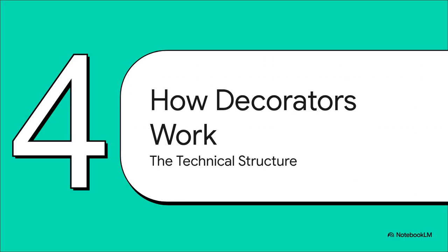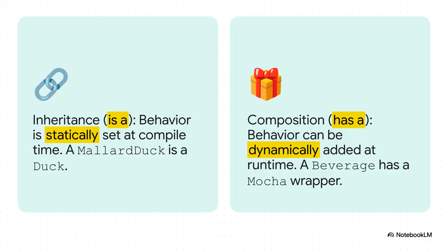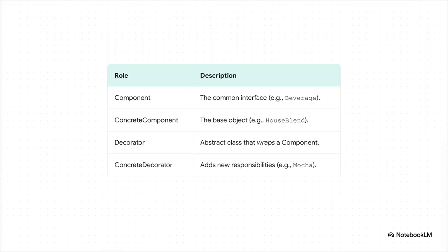We've seen the magic in action. Now let's pull back the curtain and look at the formal structure. At its core, the decorator pattern is a classic case of favoring composition over inheritance. Inheritance creates a static is-a relationship — a mocha espresso is a beverage, and that's locked in when you compile the code. But composition creates a dynamic has-a relationship — our beverage has a mocha wrapper, and we can add or even remove that wrapper whenever we want. The pattern has four main roles: the component, which is the common interface that the original object and all the decorators share; the concrete component, which is our base object like the houseblend; the abstract decorator, which holds a reference to the thing it's wrapping; and the concrete decorator, like mocha or whip, which adds the new behavior. The secret sauce is that they all share that same component interface, which is what makes them all interchangeable.